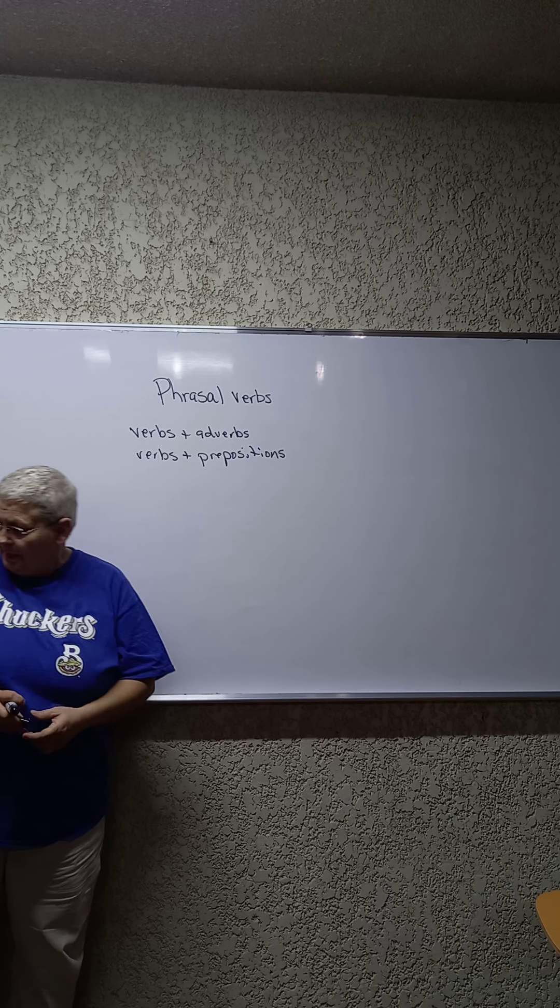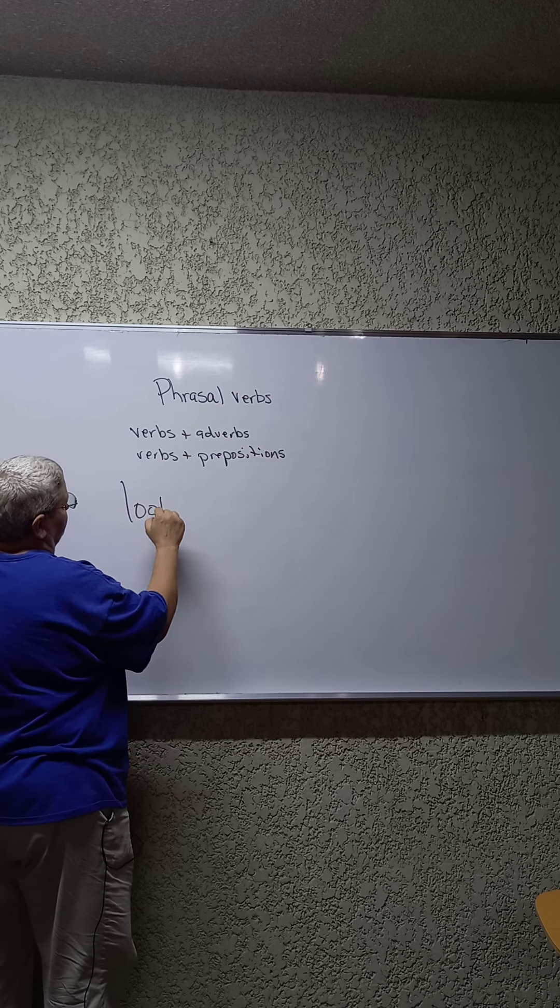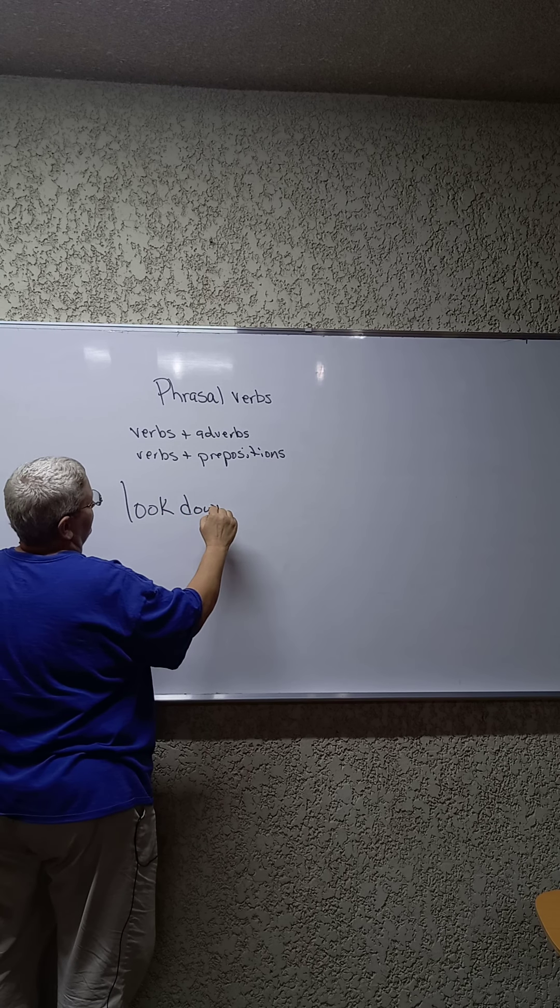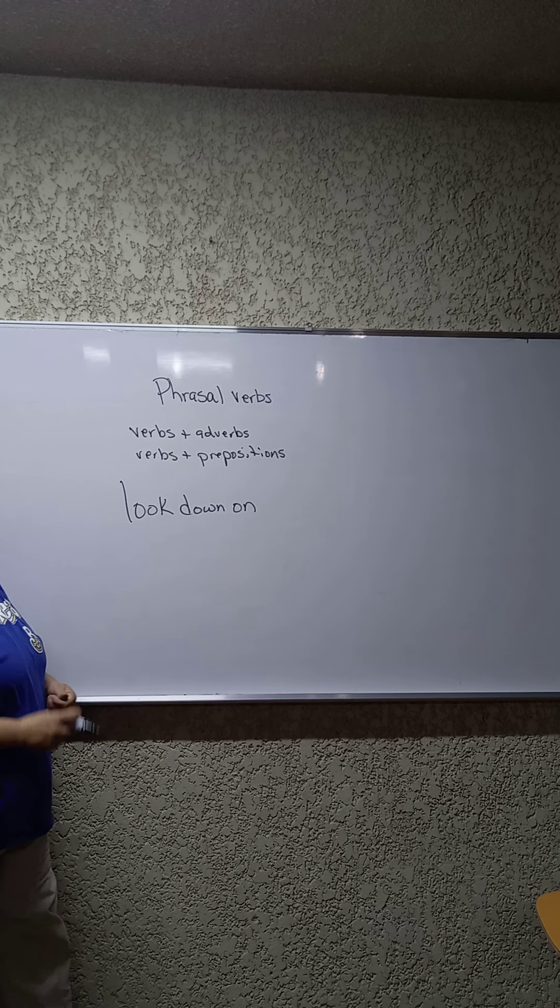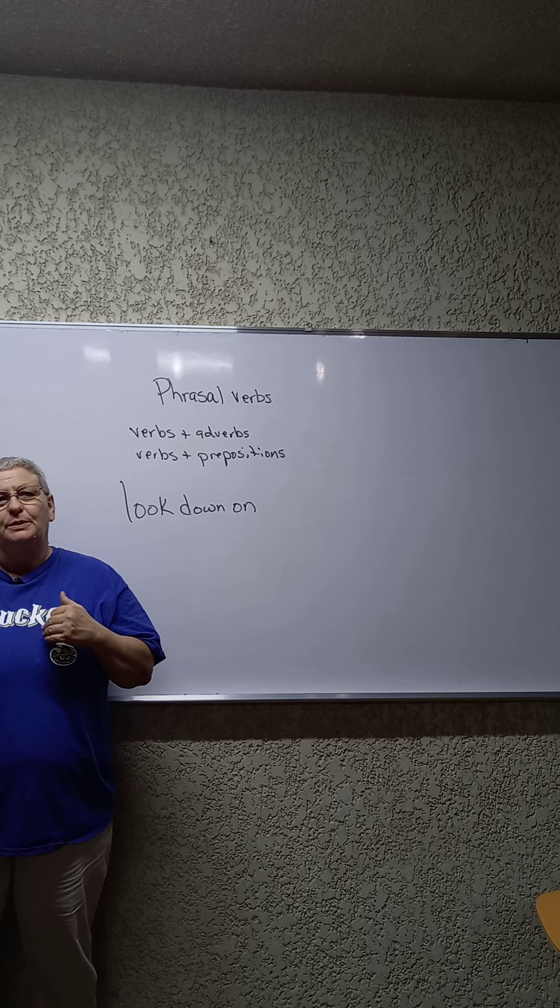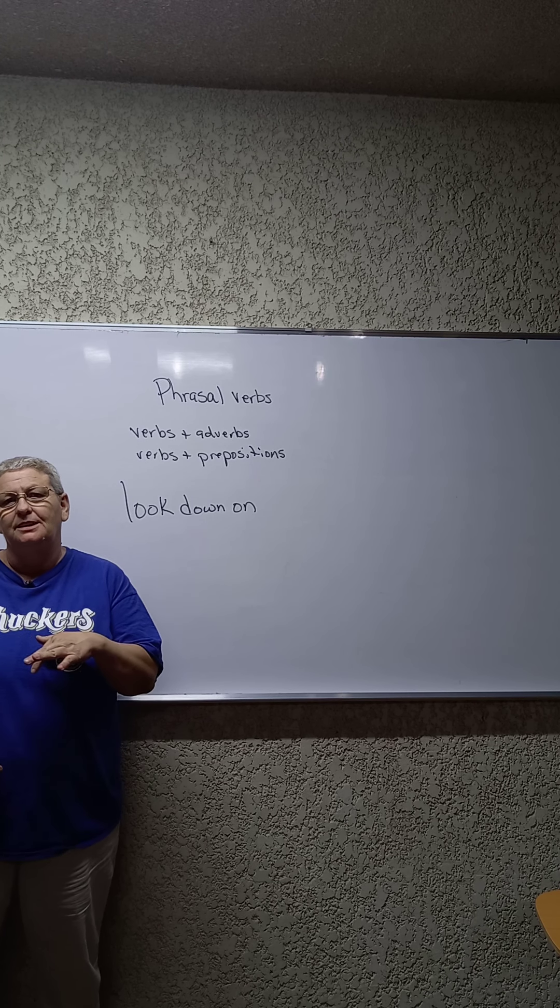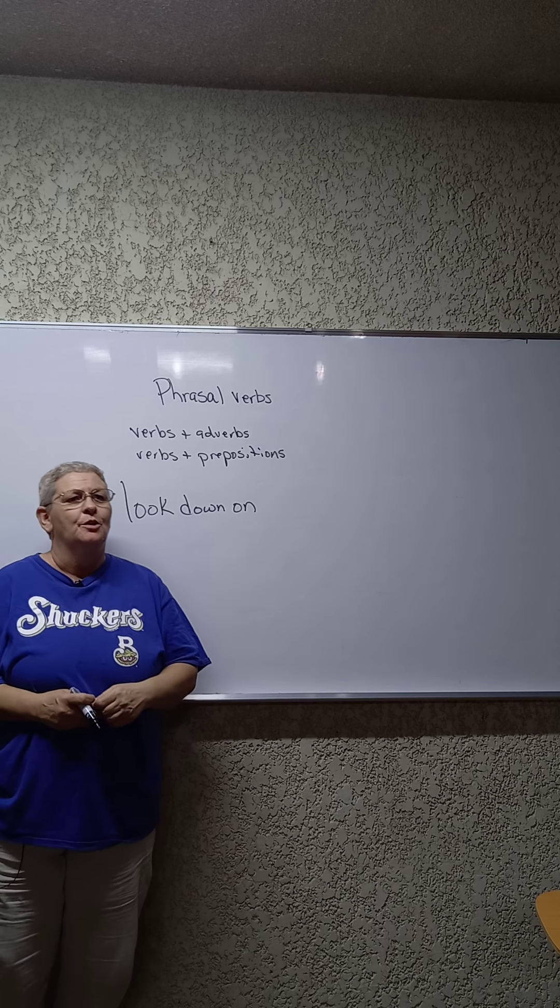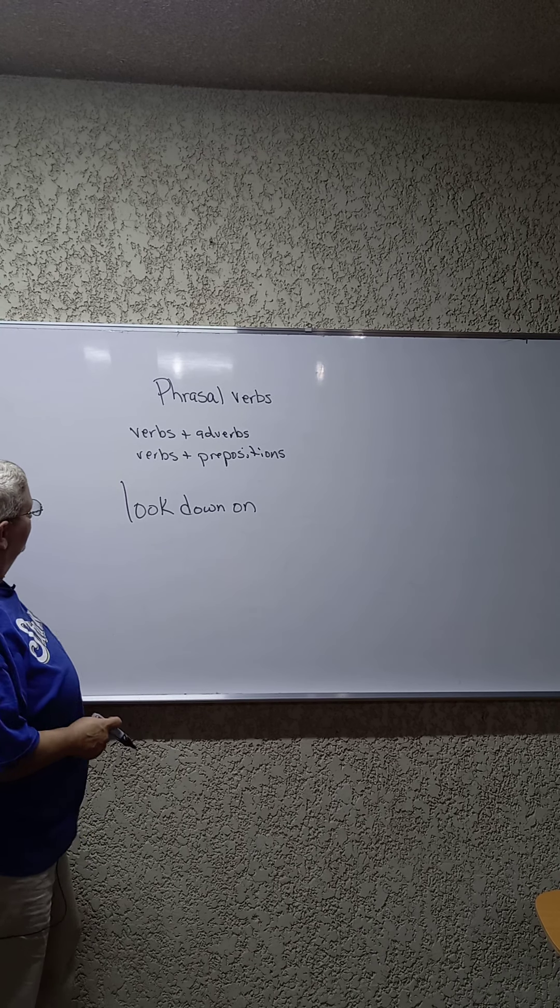Okay? So, we're going to start with look down on. When you look down on something, it means you think of it as you being more superior or better than something or someone.